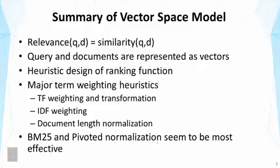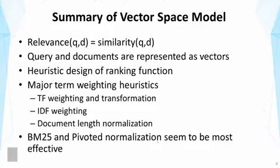I should note that I put BM25 in the category of vector space model, but in fact BM25 was derived using probabilistic modeling. The reason I put it in the vector space model is, first, the ranking function has a nice interpretation in the vector space model — it looks very much like a vector space model with a special weighting function. The second reason is that the original BM25 has a somewhat different form of IDF that doesn't work as well as the standard IDF. So as an effective retrieval function, BM25 should probably use a heuristic modification of the IDF to make it look even more like a vector space model.